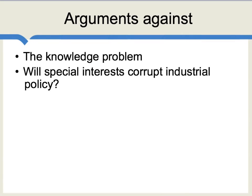Two major theoretical arguments against industrial policy are fairly straightforward but also fairly powerful. The first is the knowledge problem: do individuals in government actually know which economic sectors or firms should be encouraged? These are bureaucrats not necessarily in the best position to judge what will be a successful entrepreneurial venture. There are plenty of examples where governments have tried to encourage particular sectors, those sectors turned out to be failures, and it was a mistake for the government to think it knew which sectors should be advanced. The second argument asks whether special interests will corrupt industrial policy — industrial policy is not run by perfectly honest angels but by real, imperfect, self-interested, and sometimes corrupt human beings who respond to political incentives.